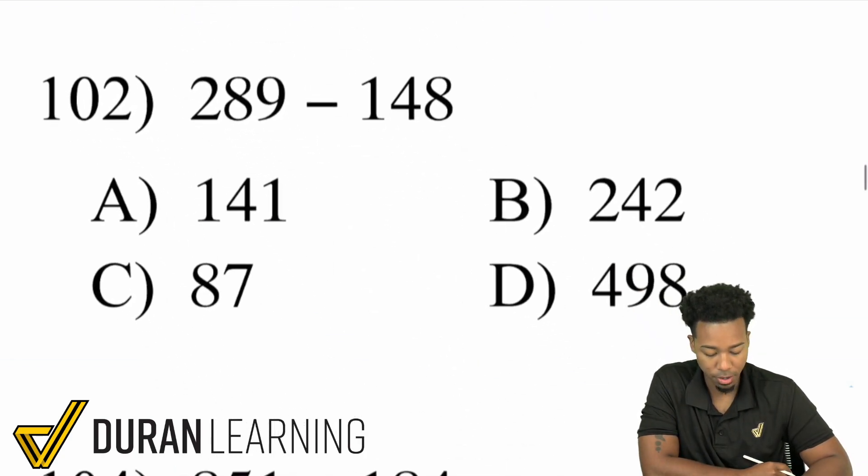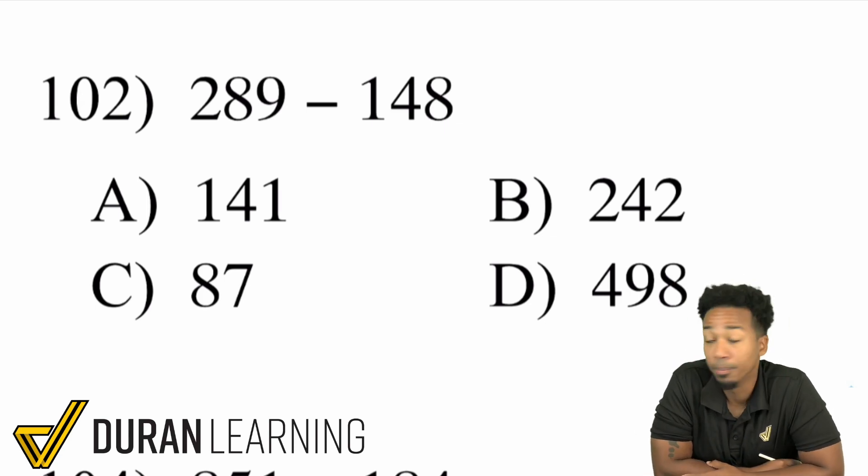Let's take a look at something harder here. 102. Number 102. So we have 289 minus 148.